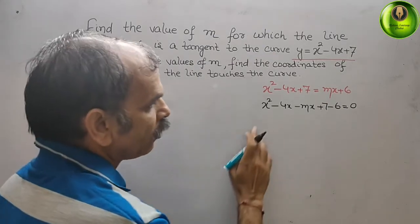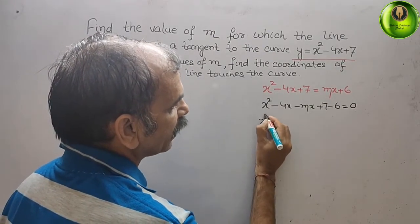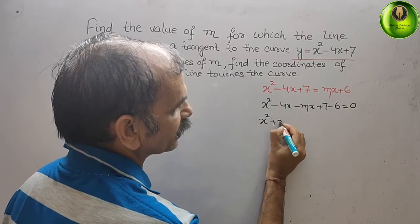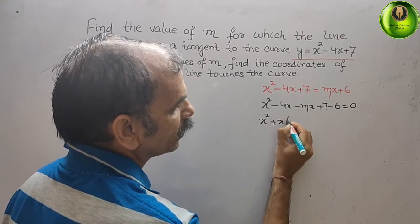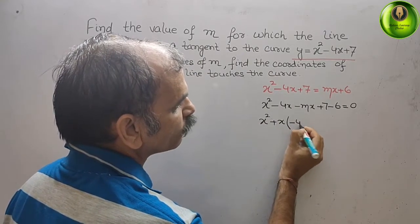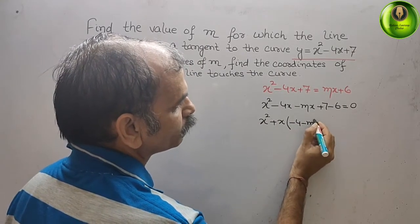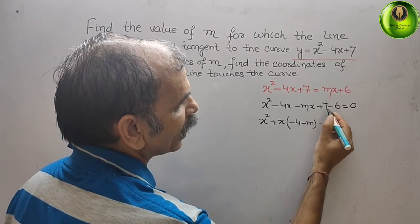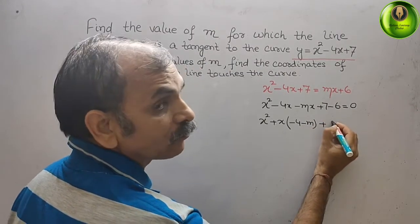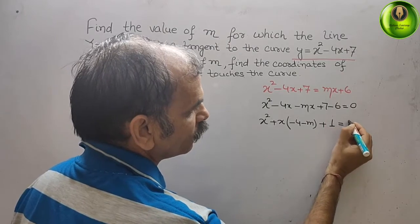We can simplify this expression. x is common from the first two terms, giving: x² + x(-4 - m) + 1 = 0, where 7 - 6 = 1.